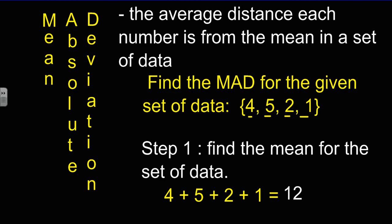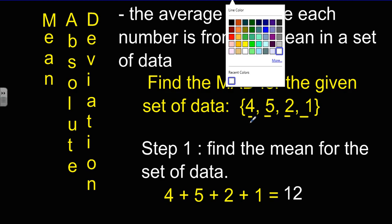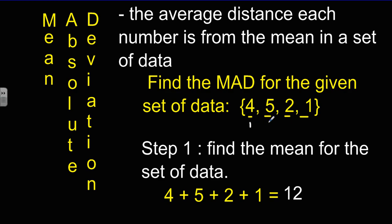Once we have that sum, then we're going to count the number of pieces of data. So we have 1, 2, 3, and 4. And that's the number I'm going to divide by to find the mean. 12 divided by 4 equals 3. So the mean for this set of data is equal to 3.